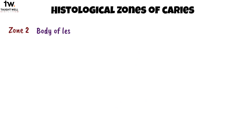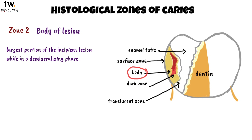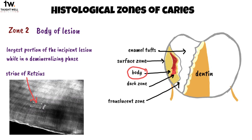Zone 2 is the body of the lesion — the largest portion of the incipient lesion while in a demineralizing phase. The striae of Retzius are well marked in the body of the lesion, indicating preferential mineral dissolution along these areas of relatively higher porosity. The first penetration of caries into enamel occurs via the striae of Retzius, and bacteria may be present in this zone.